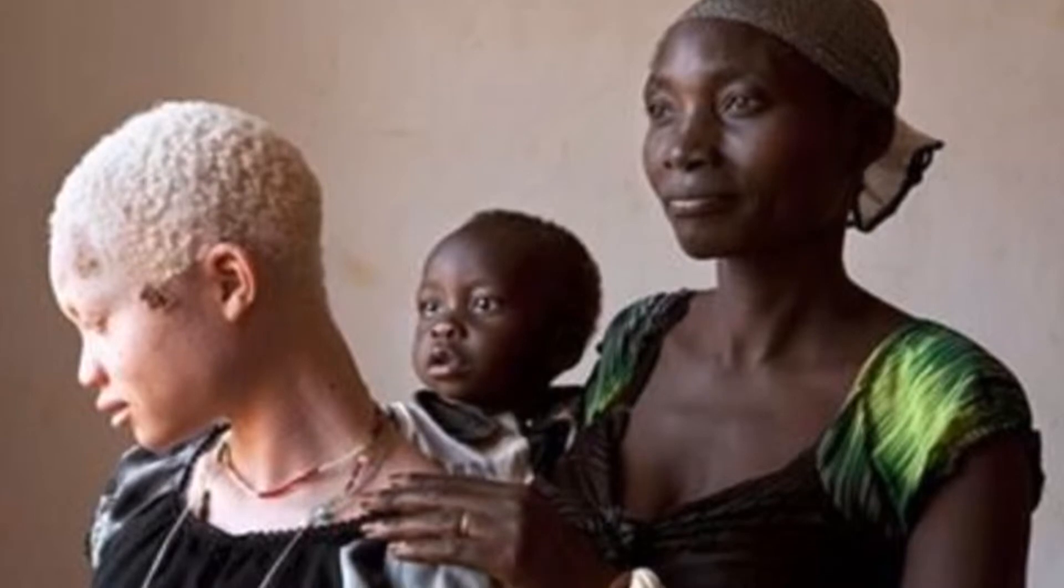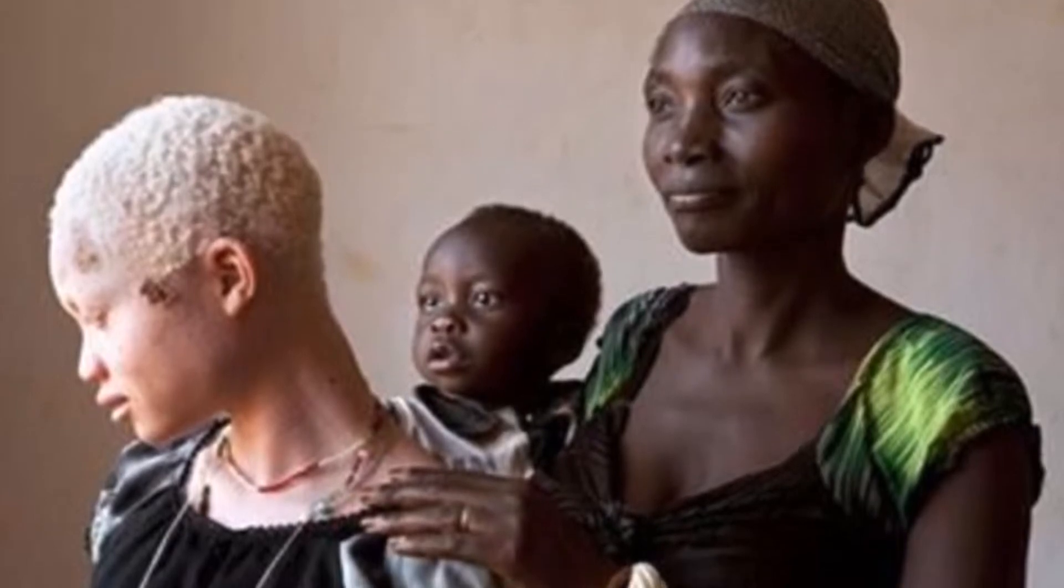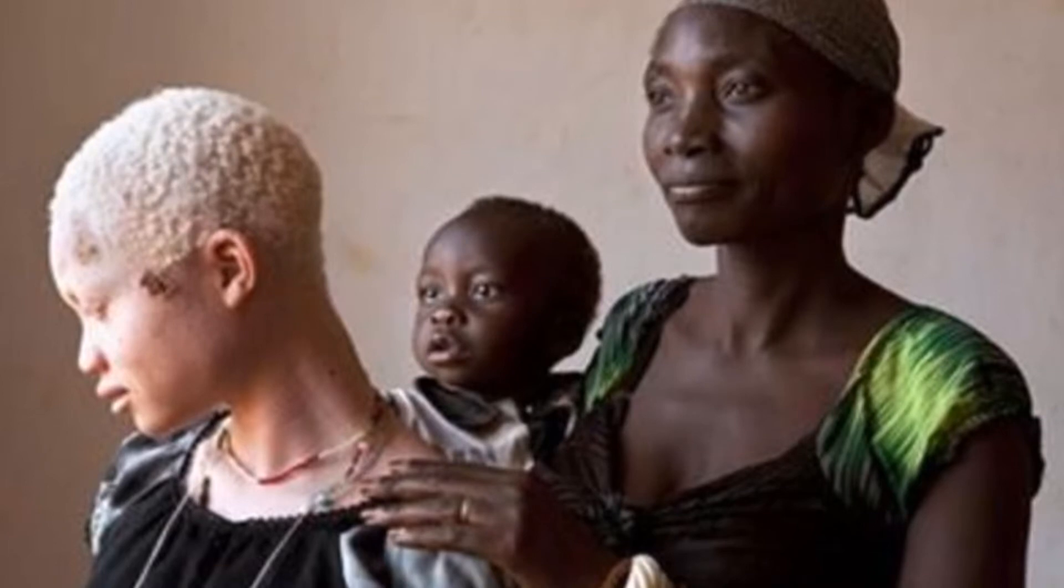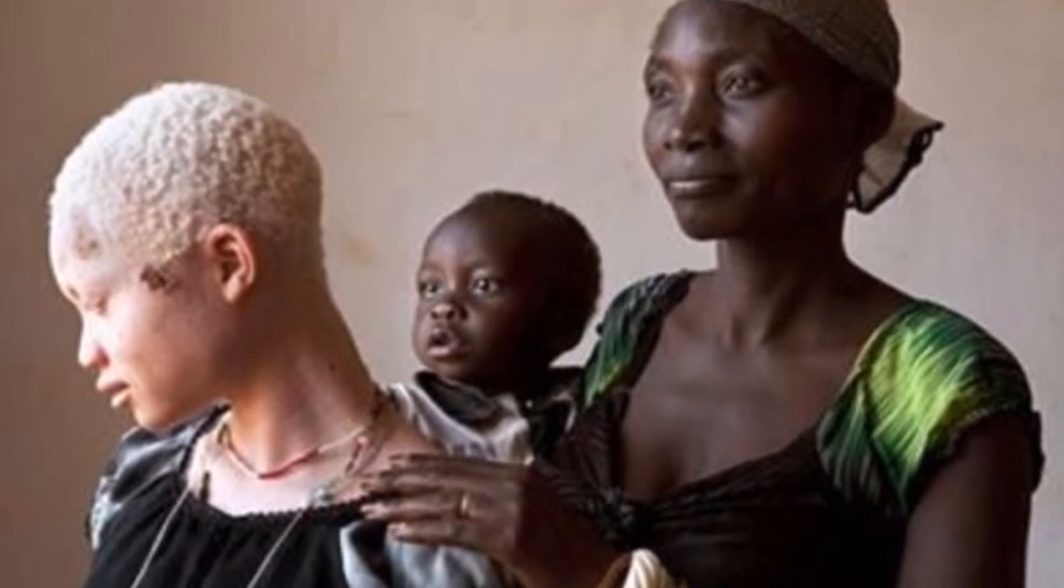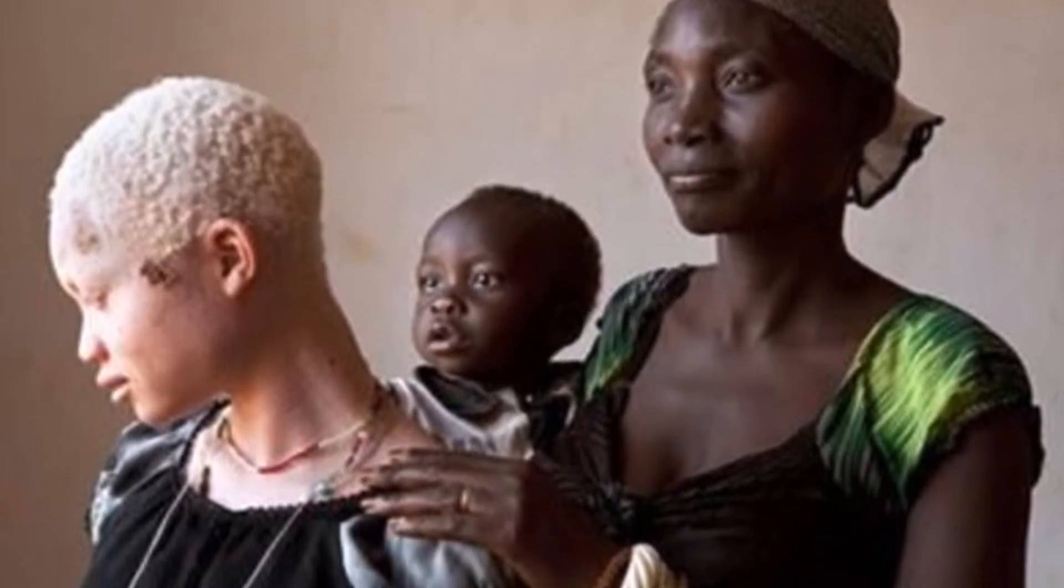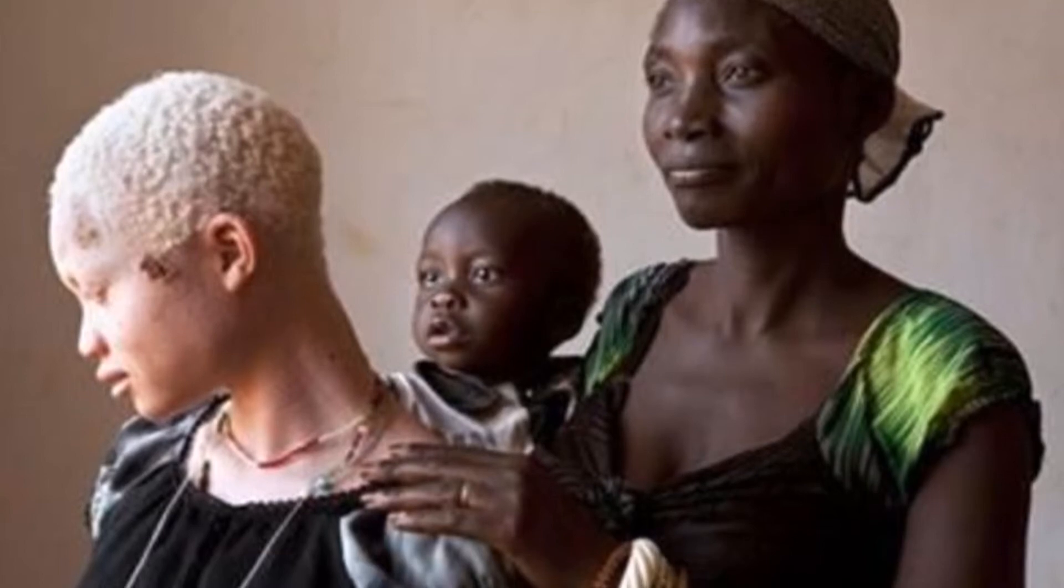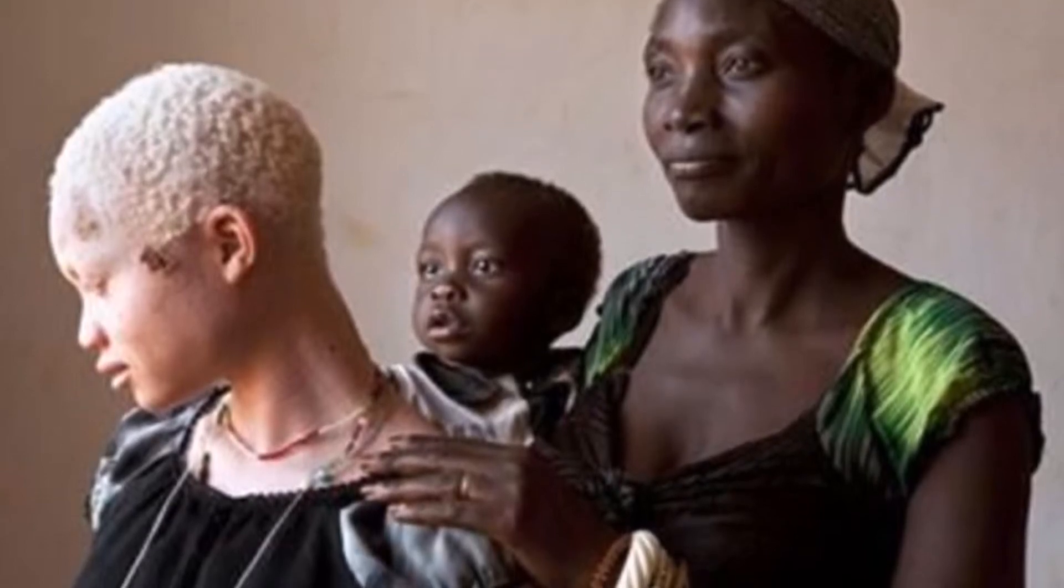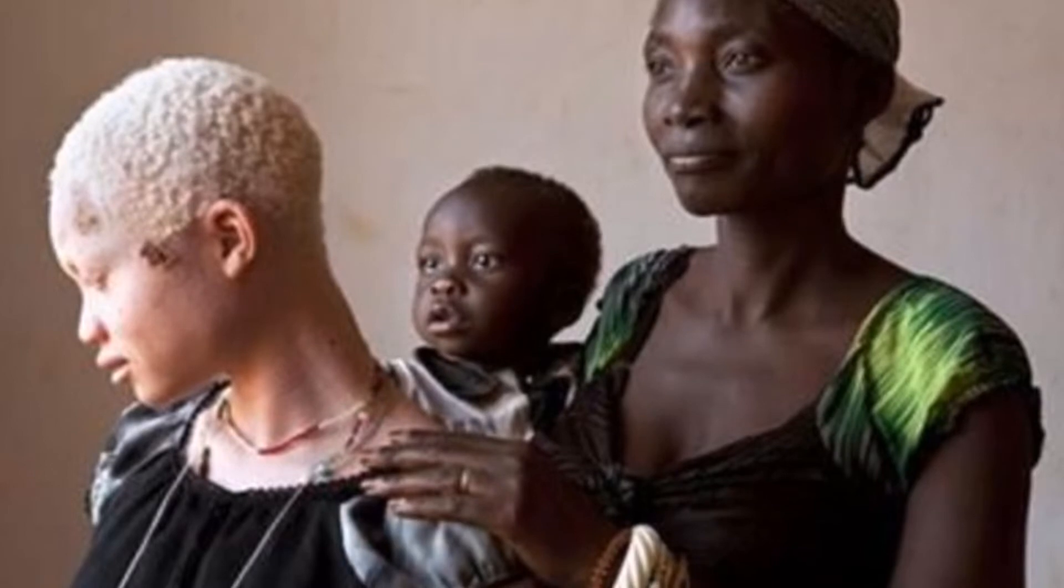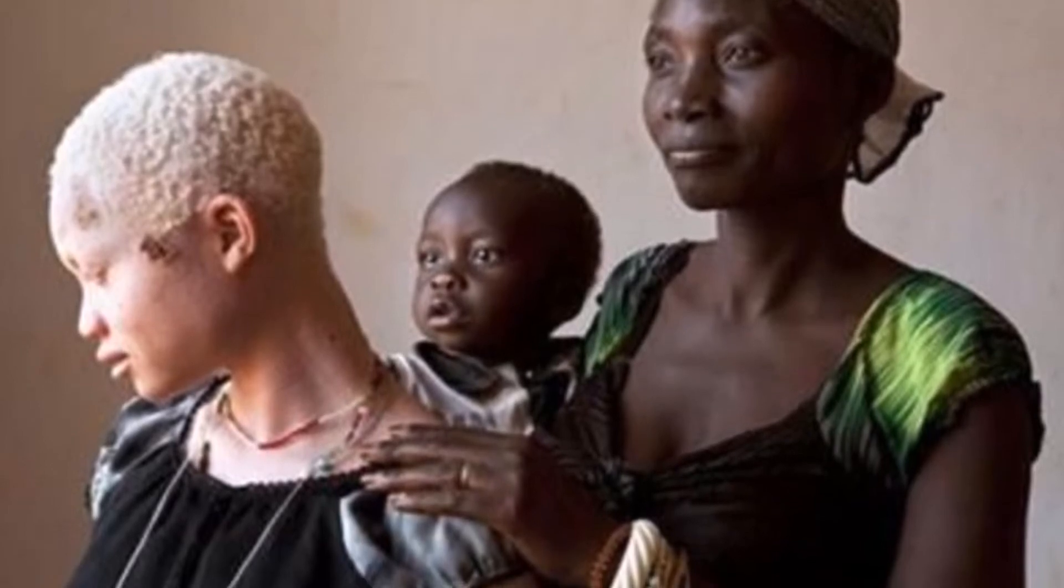In humans, over 100 mutations have been identified in the TYR gene and are associated with type 1 oculocutaneous albinism or OCA1. It is common that these mutations will often eliminate the activity of tyrosinase, which will prevent melanocytes from producing any melanin through the species' entire lifetime.